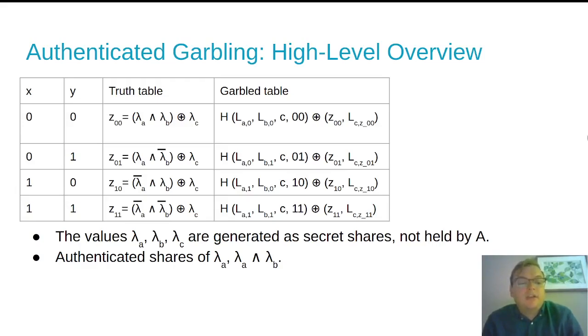So to guard against both of these attacks, you make the values lambda A, lambda B, lambda C, that are the wire masks to be held as secret shares by both parties. And then you have to authenticate shares of both all the wire masks, and then all of the AND gates.